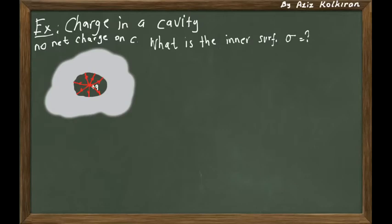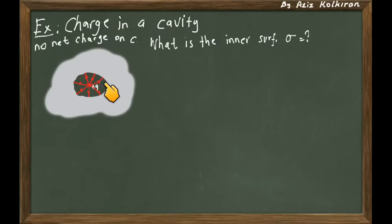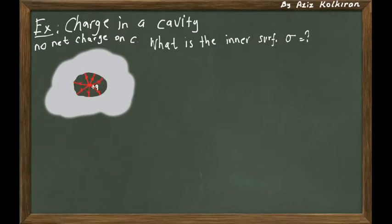The question is: what is the inner surface charge density of the conductor? Although we have no net charge on the conductor, because of the electrostatic attraction of the plus charge Q inside the cavity, some charges will accumulate on the surface. The electric field lines are non-zero right on the inner surface, and if there is a non-zero electric field ending on or emerging from a conductor, then there must be some charges on the surface.